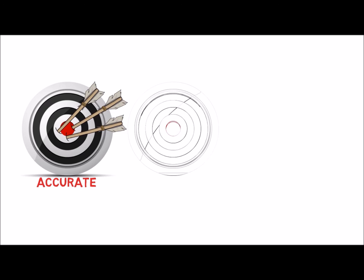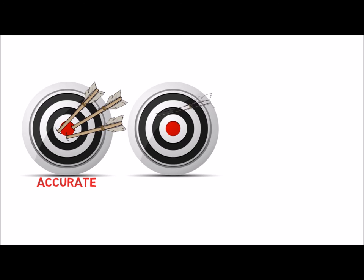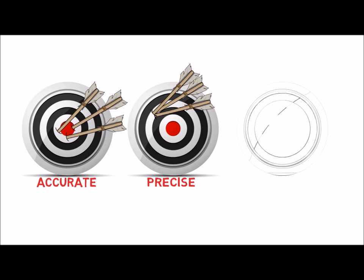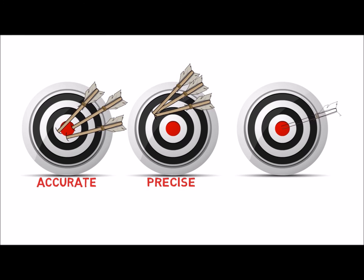Accuracy is how close a measured value is to the accepted or real value. Precision is the degree of reproducibility of a measured quantity, or how close a series of measurements of the same quantity are to one another.